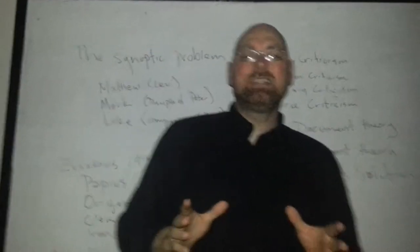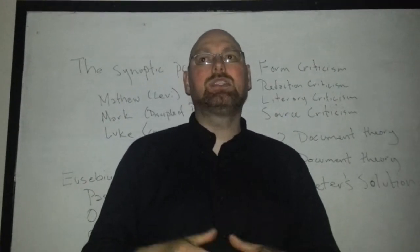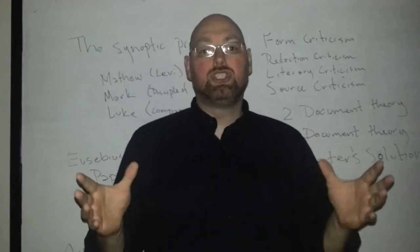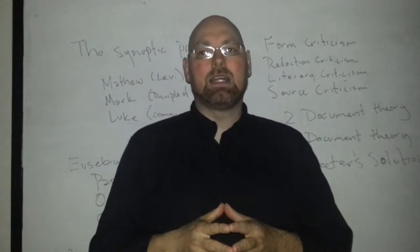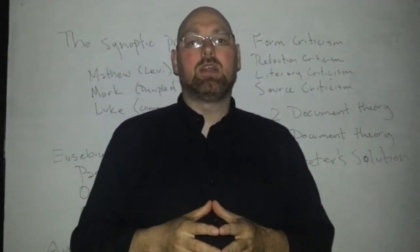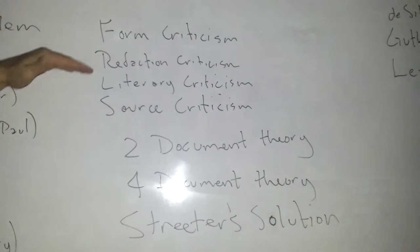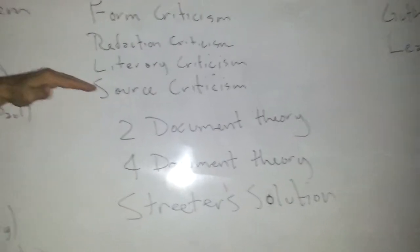In the 19th century and in the 20th century, there was this higher scholasticism, higher criticism that started basically in Germany and some other places around the world. And so out of this scholasticism, we've developed form criticism, redaction criticism, literary criticism, and source criticism.